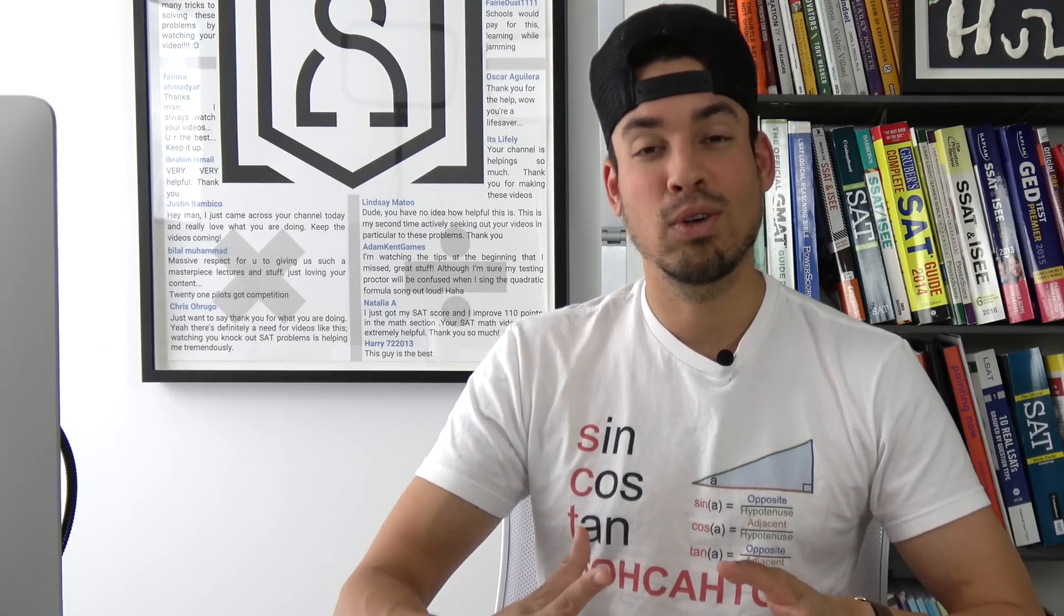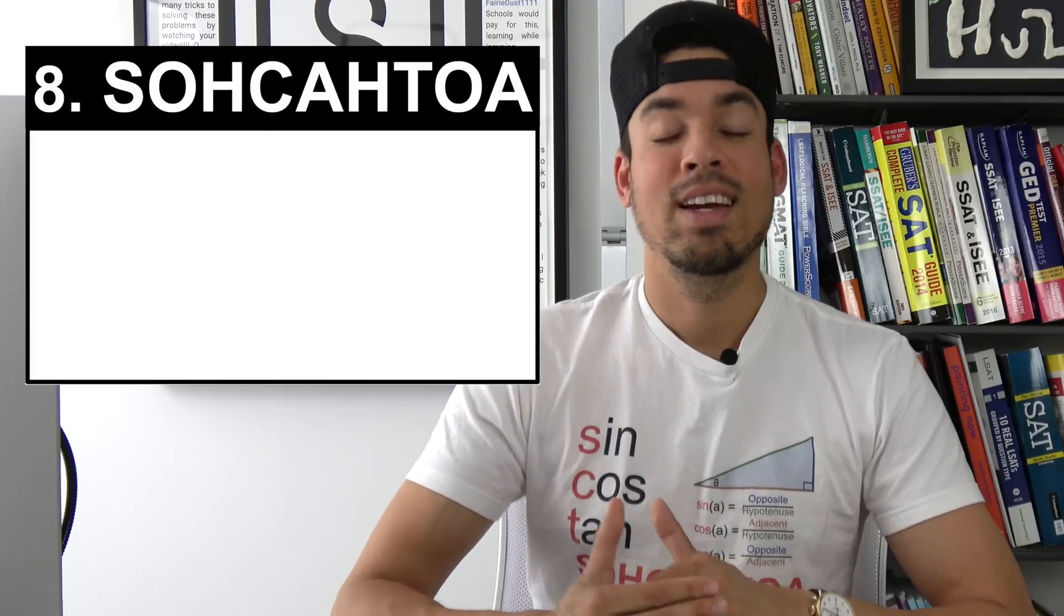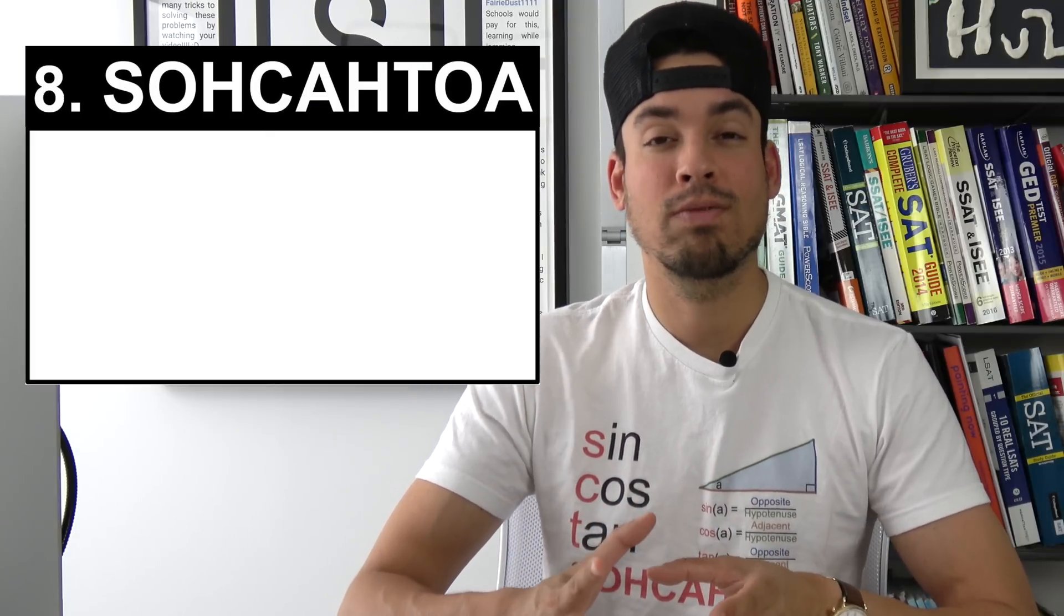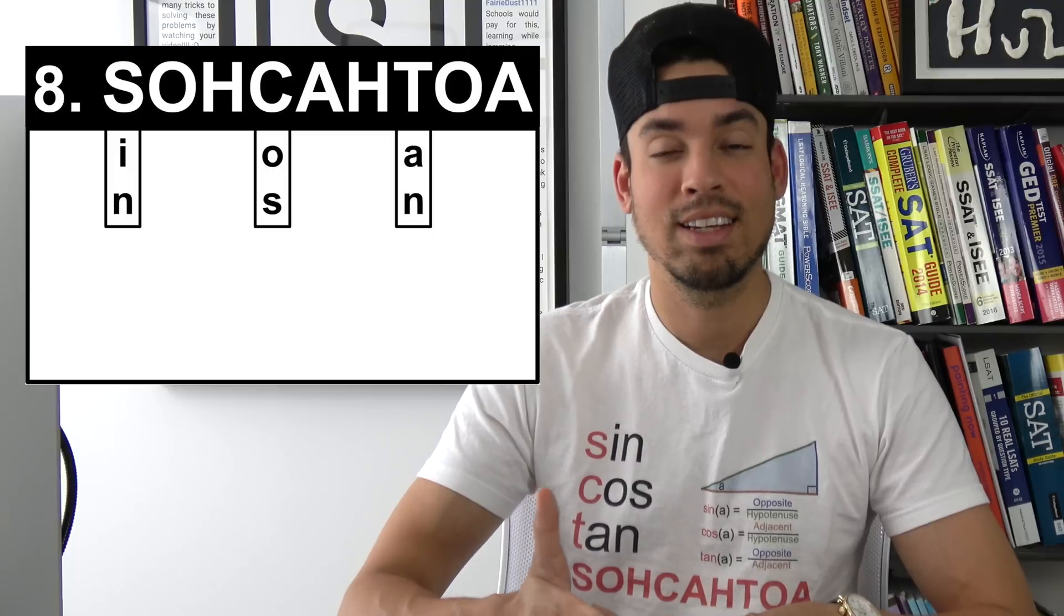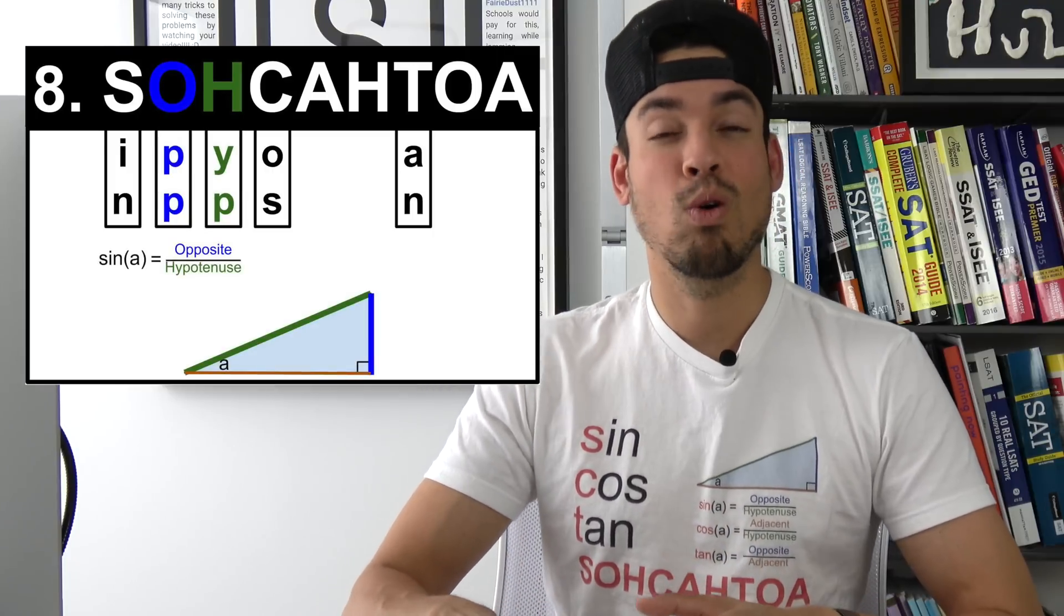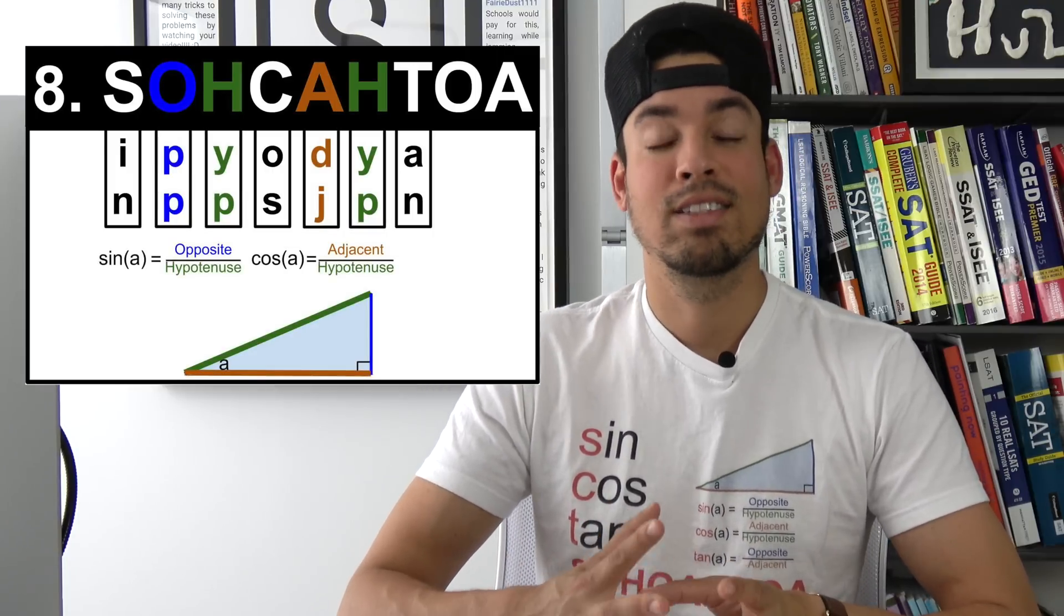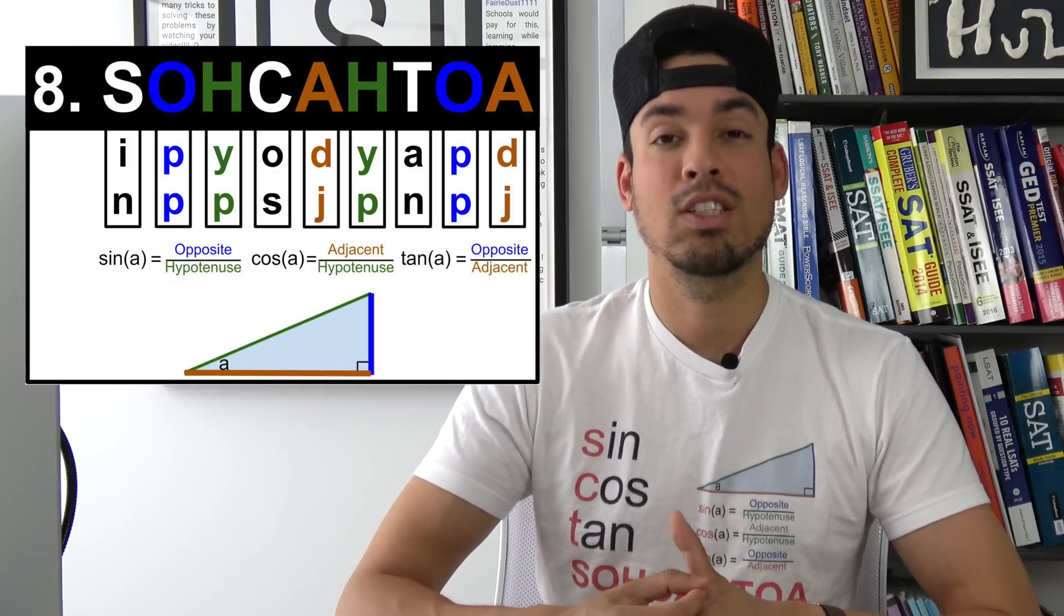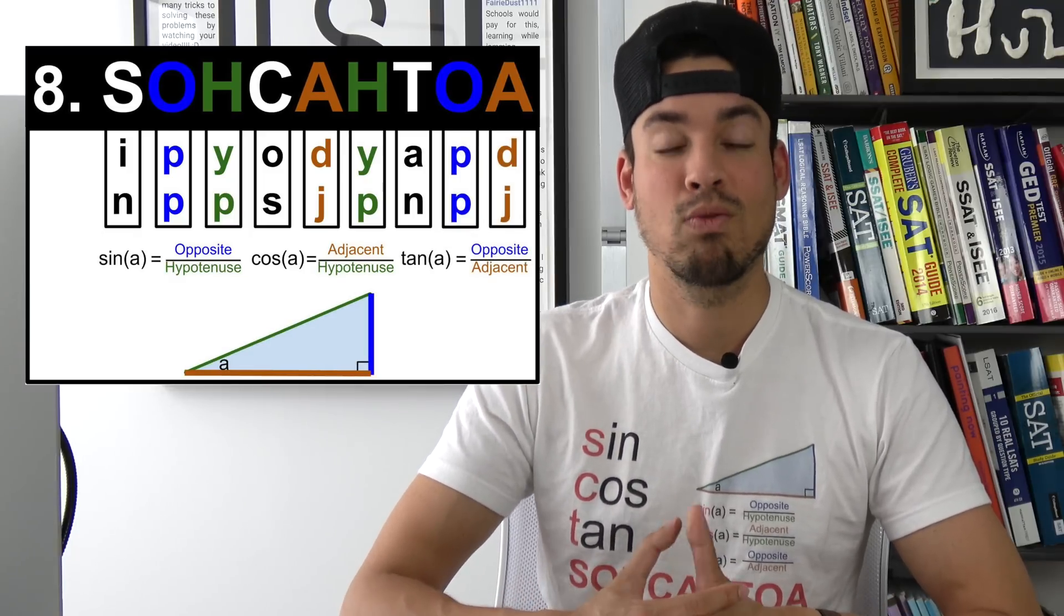Next on the list is SOH CAH TOA which of course I'm wearing on my shirt. And that's an incredible acronym to help you remember the ins and outs of the trigonometric functions sine, cosine, and tangent. SOH stands for sine is opposite over hypotenuse. CAH stands for cosine is adjacent over hypotenuse. And TOA stands for tangent is opposite over adjacent.